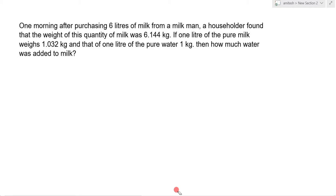One morning after purchasing 6 liters of milk from a milkman, a householder found that the weight of this quantity of milk was 6.144 kg. If one liter of pure milk weighs 1.032 kg and that of one liter of pure water is 1 kg, then how much water was added to the milk?